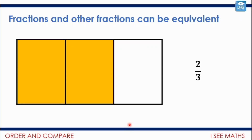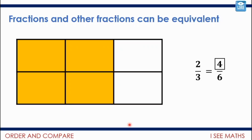Let's look at that another way using fractions of shapes. Here's two thirds — I've got two boxes out of three equally sized boxes. Two thirds is the same as how many sixths? If I just broke down the thirds in half, we'd have four sixths. We can see we have the same amount: the whole and the parts have been the same size, so those fractions are equivalent. They're the same.